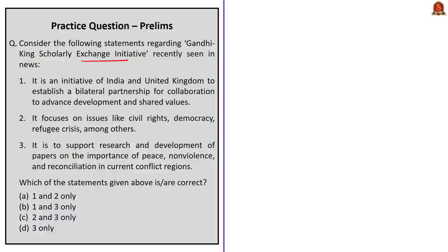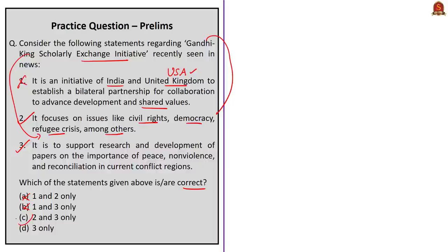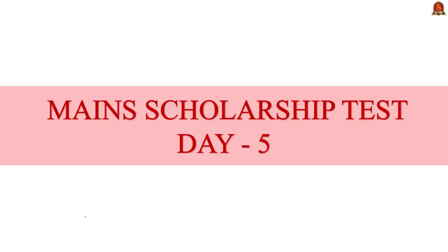The next question is about the Gandhi-King Scholarly Exchange Initiative. Statement 1 says it is an initiative of India and the United Kingdom — this is incorrect; it is between India and the United States of America. This eliminates options A and B. Statement 3 — it focuses on issues like civil rights, democracy, and refugee crisis among others — is correct. One can easily relate this to the names Gandhi and Martin Luther King Jr. Statement 2 is also correct. The correct answer is option C — statements 2 and 3 only.